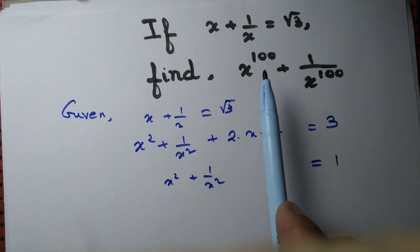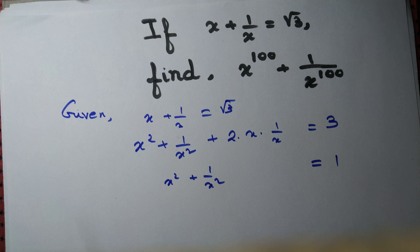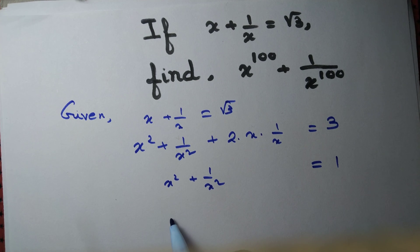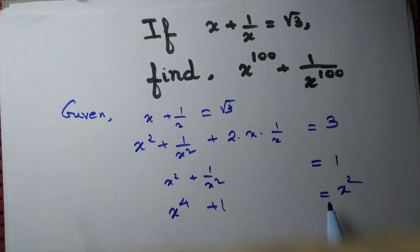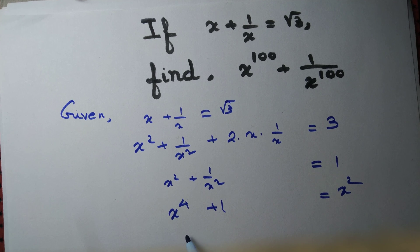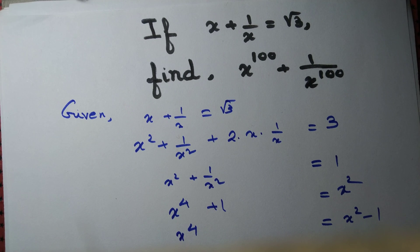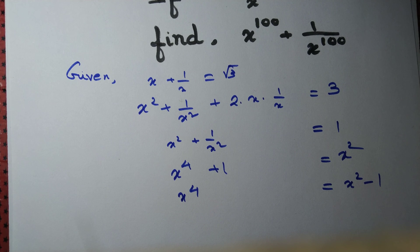So x squared plus 1 by x squared equals 1. We could keep squaring repeatedly to get the answer, but that would require doing it many times. Is there another method? Yes. Let's multiply the equation throughout by x squared: we get x to the power 4 plus 1 equals x squared, or in other words x to the power 4 equals x squared minus 1. So we can reduce x to the power 4 to x to the power 2.